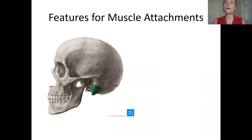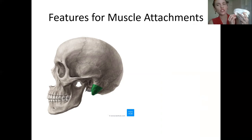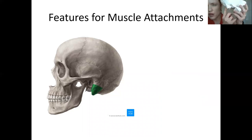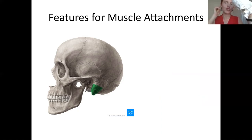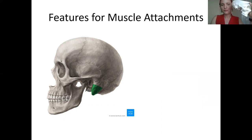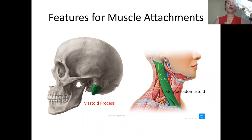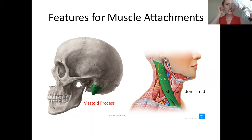Now let's look at bone features involved in muscle attachments. The one right behind your ear — that mound of bone — is called the mastoid process. The mastoid process connects to the sternocleidomastoid muscle, which is used to turn your head. So it attaches to the mastoid process, and that's what allows you to turn your head.